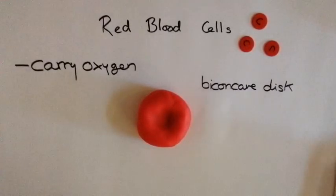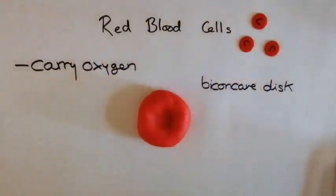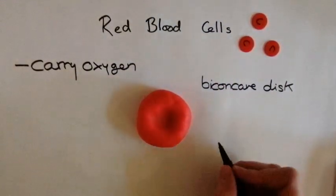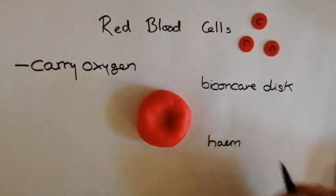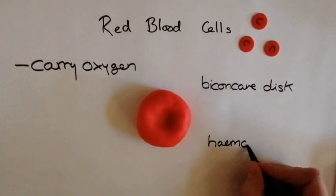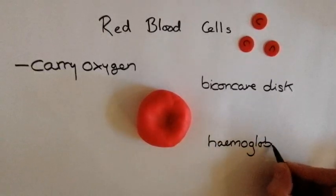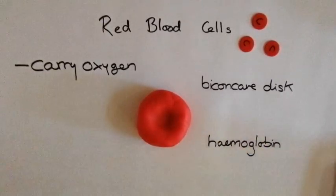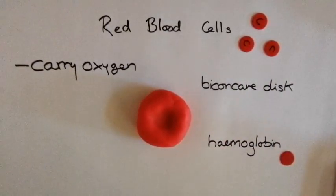The other special thing a red blood cell has is a chemical called haemoglobin. Haemoglobin is actually the bit that makes it red.